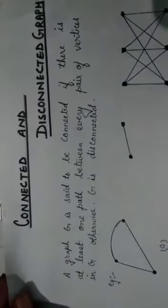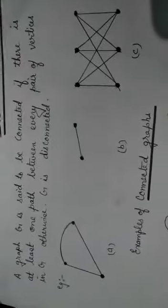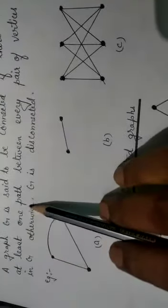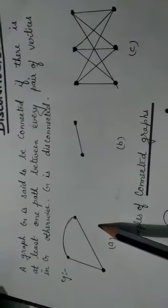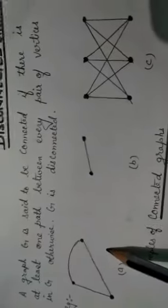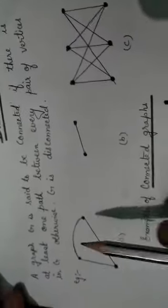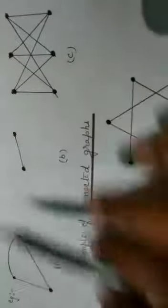Next is connected and disconnected graph. A graph G is said to be connected if there is at least one path between every pair of vertices in G. Otherwise, it is said to be disconnected.